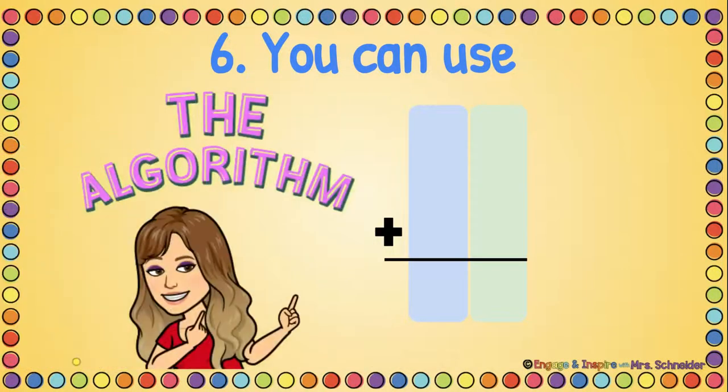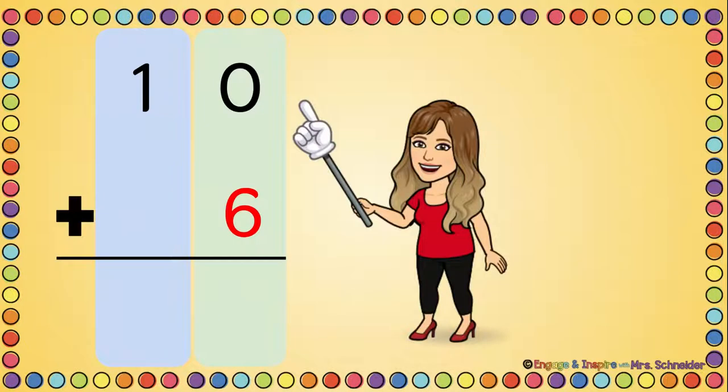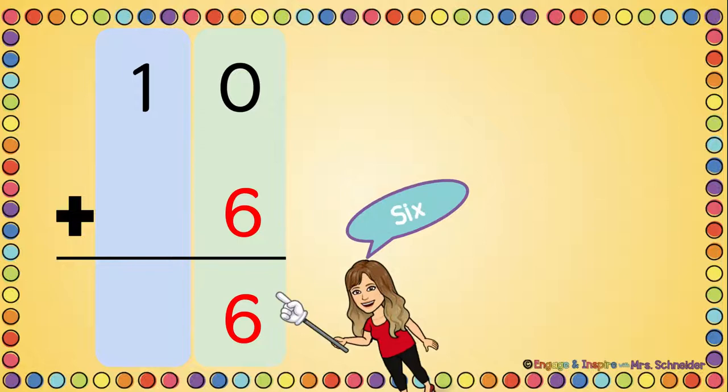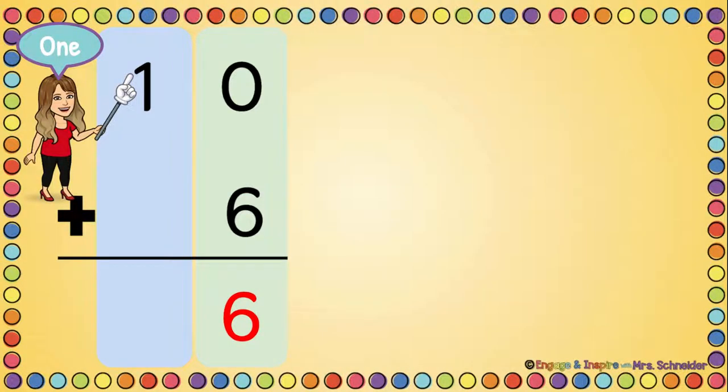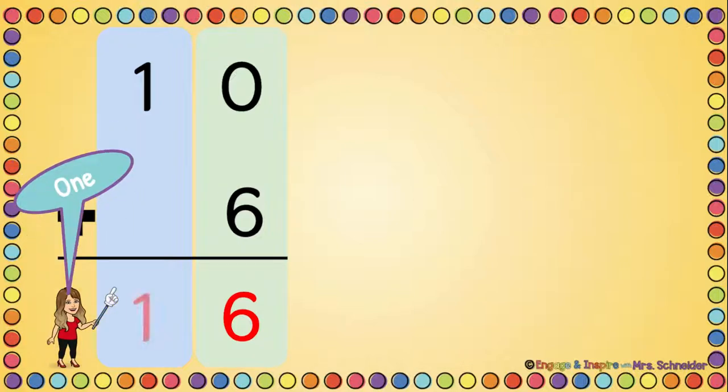You can also use the algorithm. Here you know how to use the algorithm. We always start on the right. We always add the ones first. So 0 plus 6 equals 6. Now we go to the tens. 1 plus 0 equals 1. So 10 plus 6 is 16.